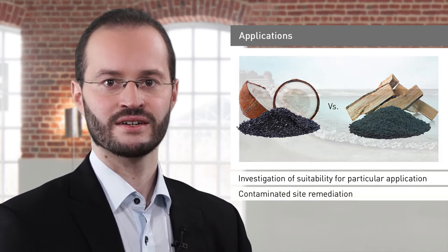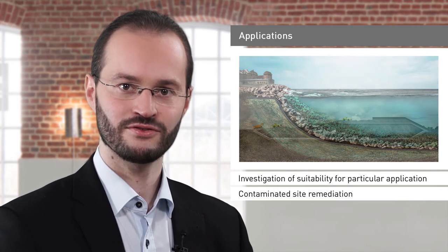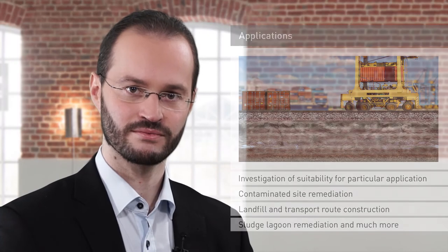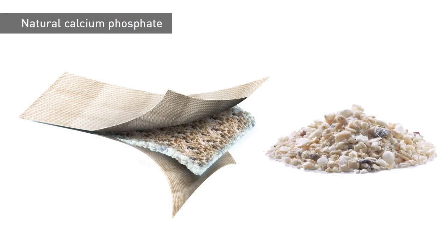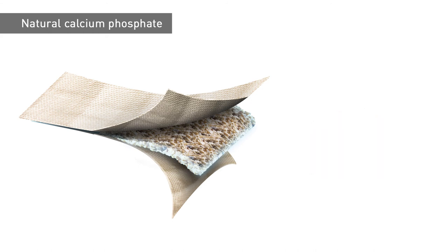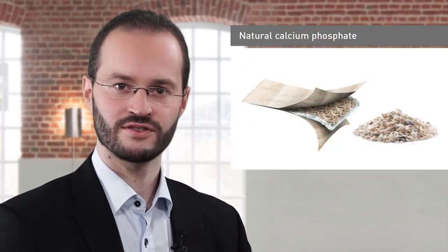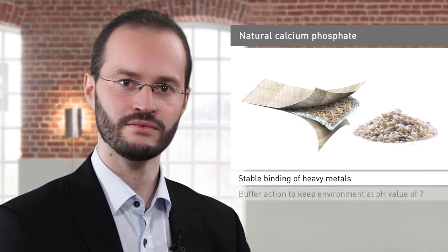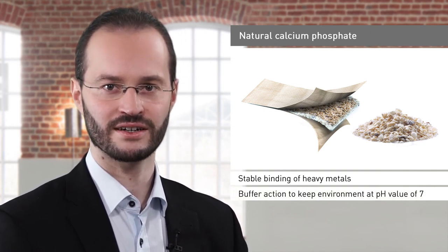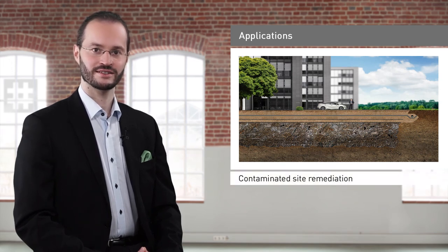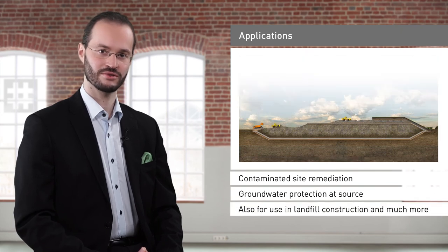Activated carbon can be used for contaminated site remediation, for example to cap contaminated sediments in water bodies, as well as for landfill construction, transport routes, sludge lagoon capping and much more. The active material natural calcium phosphate binds a variety of heavy metals such as lead, uranium, cadmium and zinc. The heavy metals form crystals on the surface of the active substance, which are very stable and remain insoluble under normal conditions. Natural calcium phosphate thus serves to prevent the migration of heavy metals into the environment, and also acts as a buffer to ensure a pH value of 7 in its immediate environment. Applications include the storage of heavy metal contaminated soils, contaminated site remediation, the prevention of groundwater pollution at source, and landfill construction.